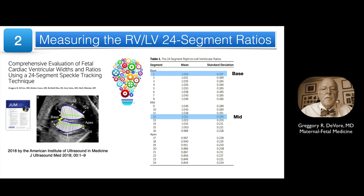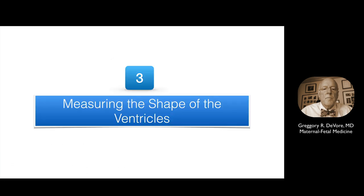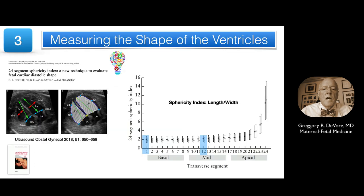This study was entitled Comprehensive Evaluation of Fetal Cardiac Ventricular Widths and Ratios Using a 24-Segment Speckle Tracking Technique. The 24-segment RV-LV ratio did not correlate with gestational age or fetal biometry of the head, abdomen, or femur. These ratios are important when there is ventricular disproportion. The next set of measurements involves computing the shape of the ventricles from the 24-segment sphericity index, computed by dividing the length of the ventricle by each of the 24-segment widths at end-diastole, with lower values associated with a globular-shaped chamber and higher values with a more flattened chamber.